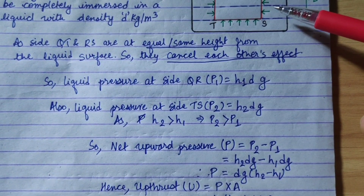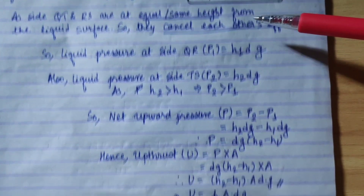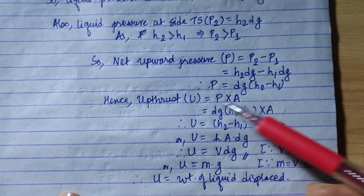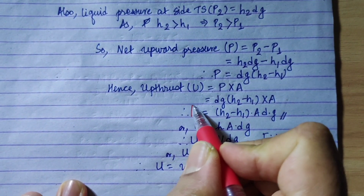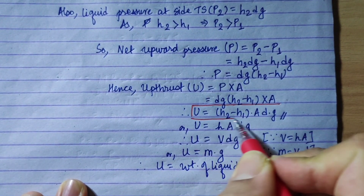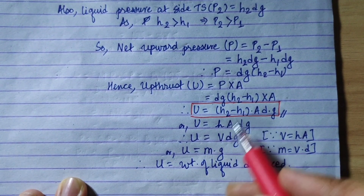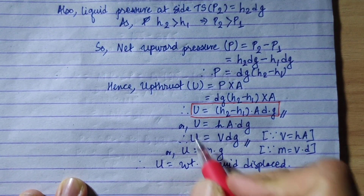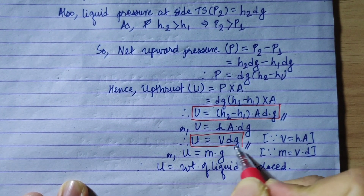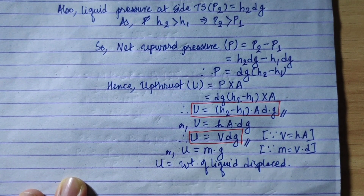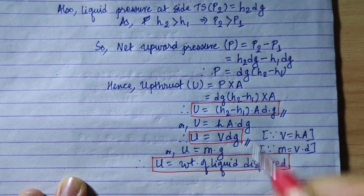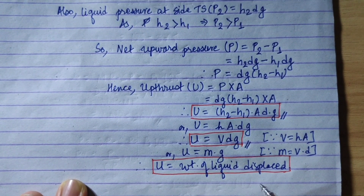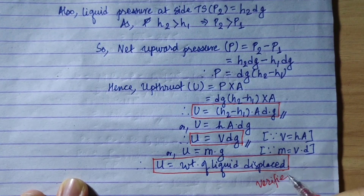Using this diagram and the concept of net upward pressure, and applying the formula upthrust equals pressure times area, and replacing values step by step: upthrust = (h2 - h1)·A·d·g is proved. Then replacing (h2 - h1) with height h, and h·A with volume V, we get upthrust = V·d·g = bdg. Replacing V·d with mass m, m·g equals weight of liquid displaced. This is how Archimedes' principle is theoretically verified.